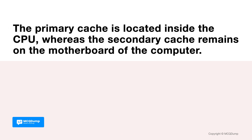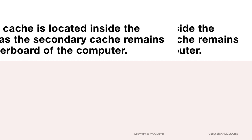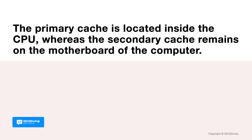The primary cache is located inside the CPU, whereas the secondary cache remains on the motherboard of the computer. True or false? It is true. The primary cache is located inside the CPU, whereas the secondary cache remains on the motherboard of the computer.